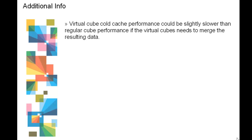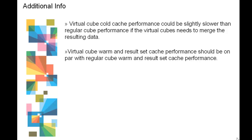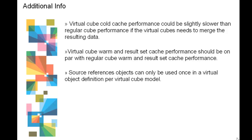Virtual cube cold cache performance could be slightly slower than regular cube performance, due to the virtual cube needing to merge the resulting data versus running the two queries against the two source cubes in parallel. Virtual cube warm and results cache performance should be on par with regular cube warm and results cache performance. Also note that source reference objects can only be used once in a virtual object definition per virtual cube model — for example, you cannot define a virtual hierarchy using a source reference hierarchy that was already defined.